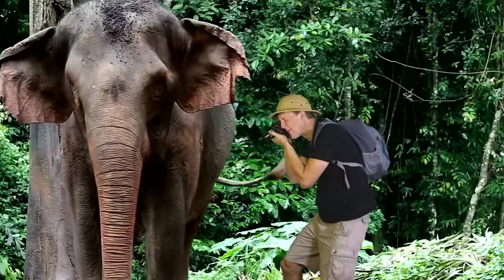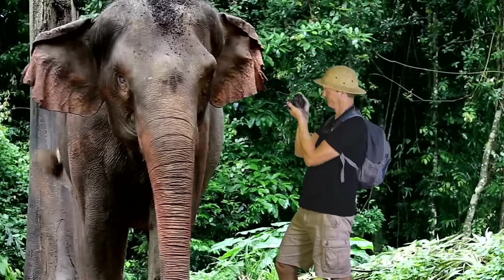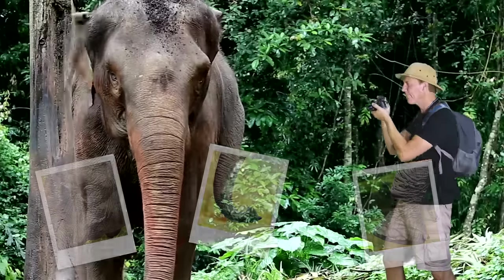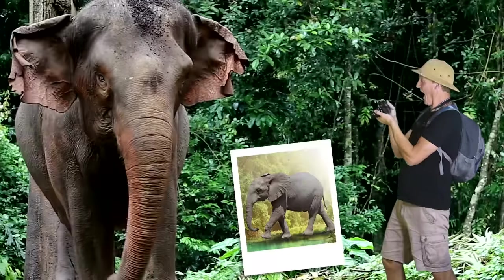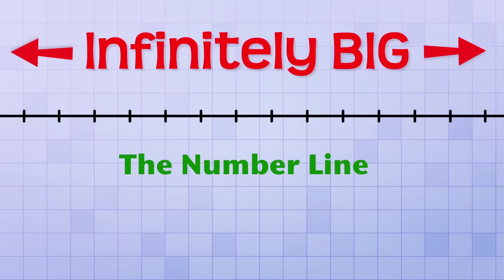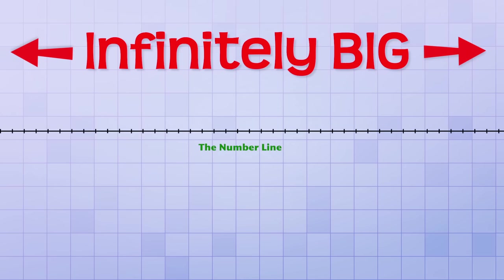It's kind of like trying to take a picture of something really big, like an elephant. If you're too close, you'll only be able to fit a small part of it in each snapshot. Of course, if you back up far enough, you could fit the whole elephant in the shot. But the number line is infinitely big. No matter how far you zoom out, you can never fit it all in a single image or drawing. So you only draw the part of it that you need for whatever problem you're working on.